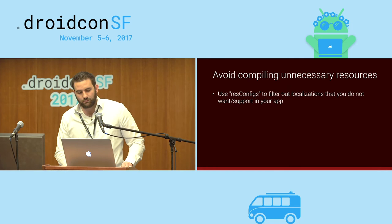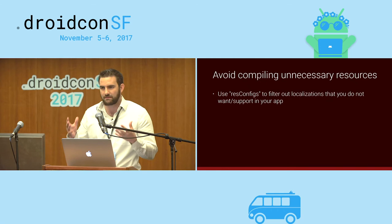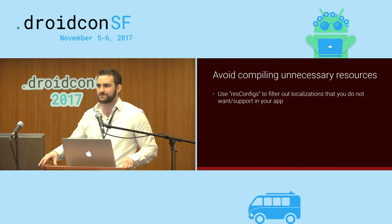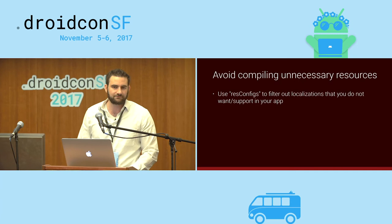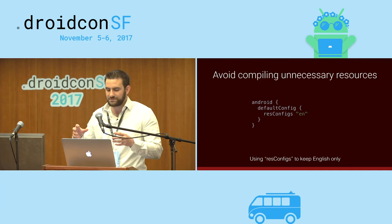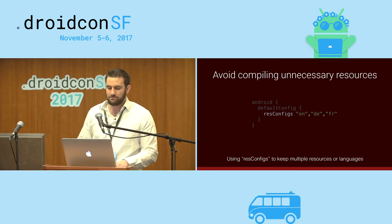One major helpful optimization is res configs. All the different libraries — Google Play Services, AppCompat, and others — bring in resources and languages you may not need for your APK. You can trim and filter out localizations and resources you don't need. In the defaultConfig or a product flavor, specify resConfigs — for example, keeping only English, or listing whatever languages your app actually supports. This acts like ProGuard, only keeping resources you explicitly list.